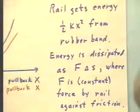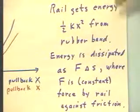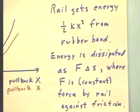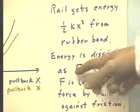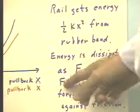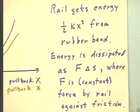So, to summarize the situation, we say that the rail gets energy one-half kx squared from the rubber band. That energy is dissipated as F delta s, where F is constant force against friction.